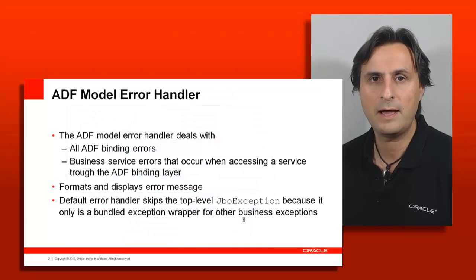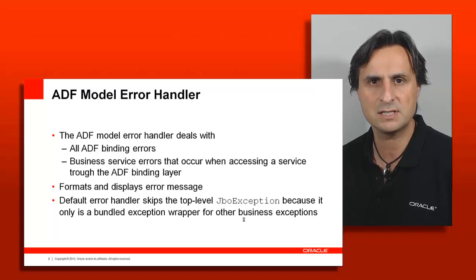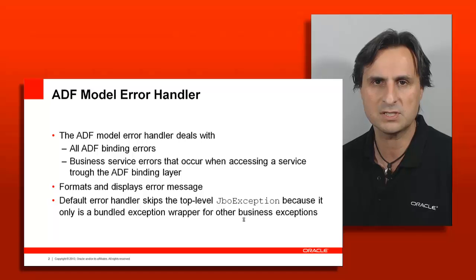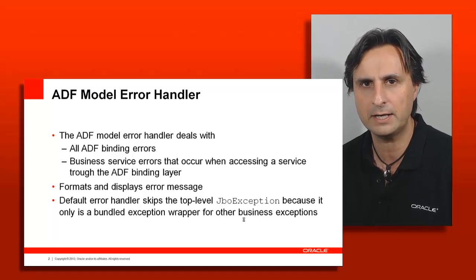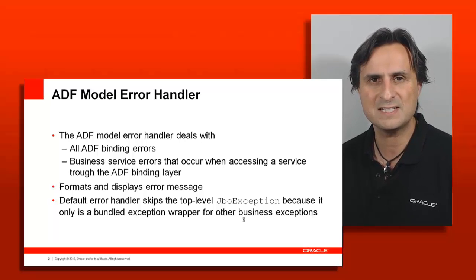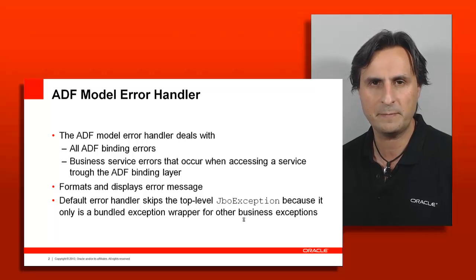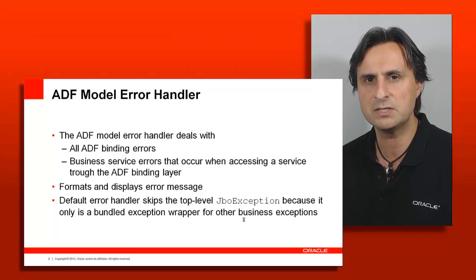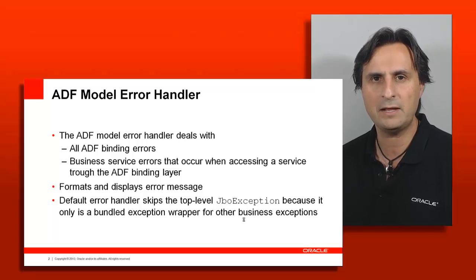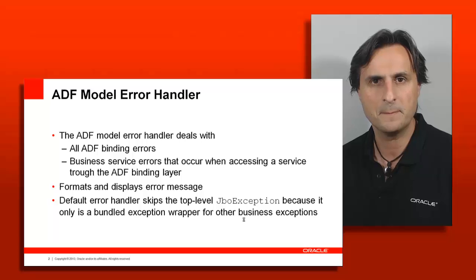The default implementation catches all of the errors that come from the business service through access to the service through the binding layer. This is why it's important that you always work through the ADF binding layer and never work around it. The error handler then formats and displays the error so that the user can see what's going on. Remember last time I talked about bundling of exceptions — what we automatically do in the ADF framework — so that instead of you waiting for 100 error messages to come up for field validation errors, you just get one error with bundled child exceptions.